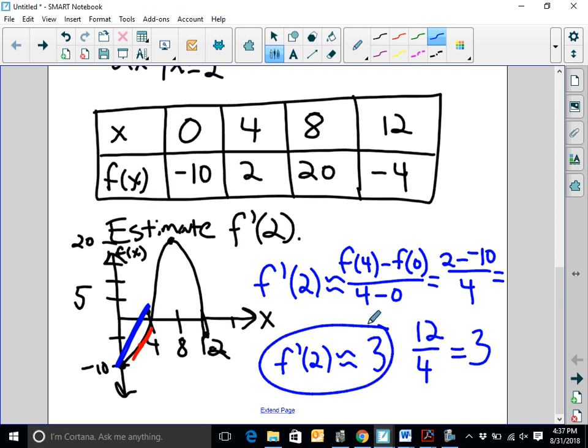Again, when you do this, they need to see a difference quotient. You can't just look at it and know that it's going to be 3 and say f prime of 2 approximately equals 3. That's not enough to do that.